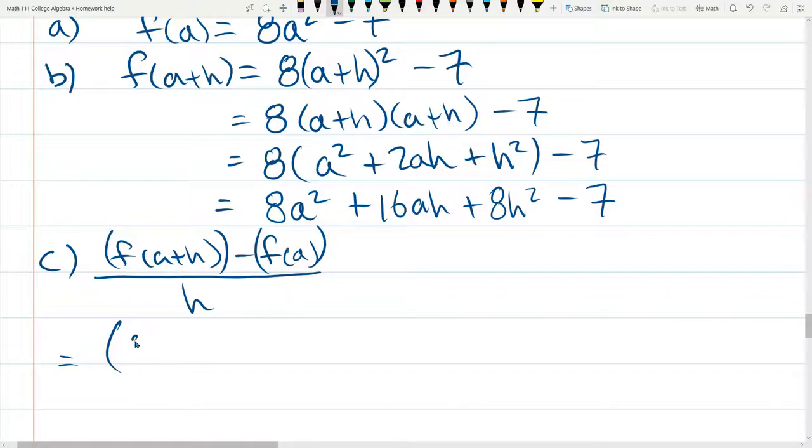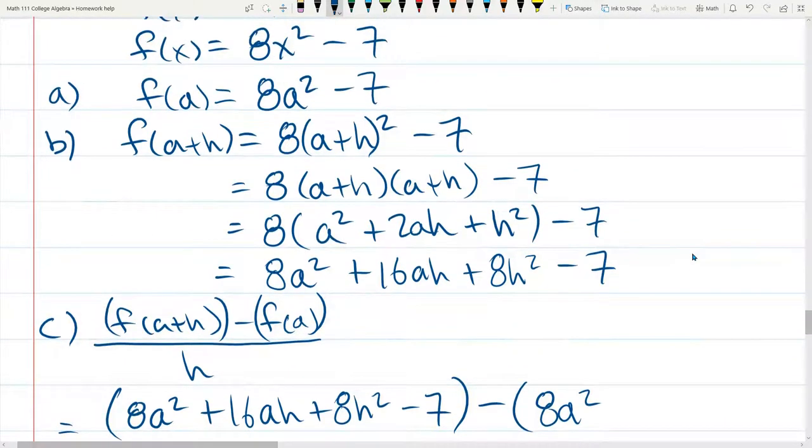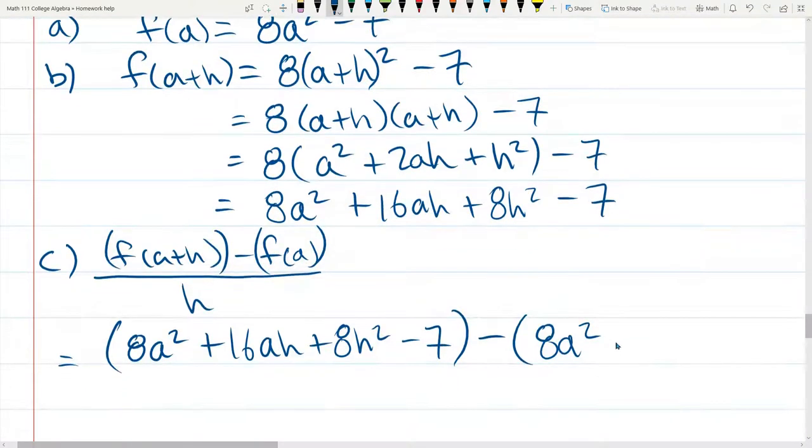So f of a plus h, I'm just copying this line right here. 8 a squared plus 16 a h plus 8 h squared minus 7. Minus f of a, which is 8 a squared minus 7. All of this is divided by h.